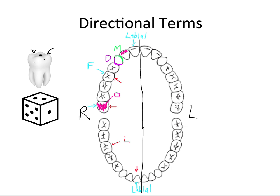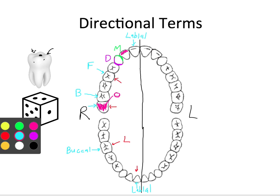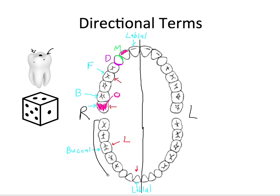The posterior teeth's facial surfaces also have a special name — they are called the buccal surface, B for short — because they're contacting the inside of the cheek. The cheek has this root associated with it, like the buccinator muscle. So that's how we distinguish between the facial surfaces of posterior teeth versus the facial surface of an anterior tooth. So in summary: in blue we have our facial surfaces, in red our lingual surfaces, and we have our mesial, distal, and occlusal surfaces.